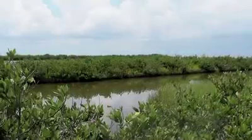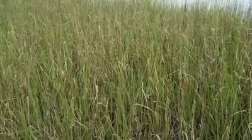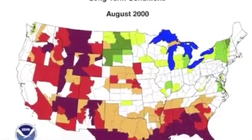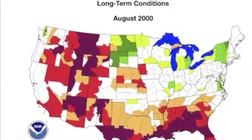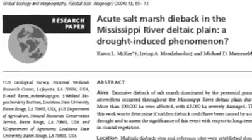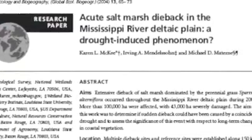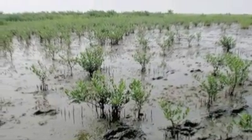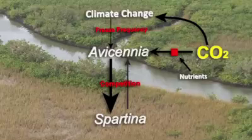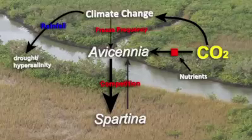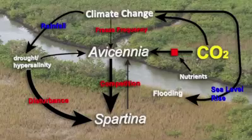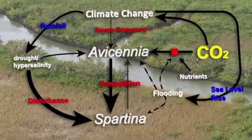With climate change, some regions will experience drier conditions and higher salinities. We can hypothesize that Avicennia is more tolerant of water stress and high salinity than Spartina, based on their natural distributions. Another piece of evidence is the large-scale dieback of salt marsh which occurred in the Mississippi River Delta at the same time as a 100-year drought. A study of the sudden dieback phenomenon was reported in the journal Global Ecology and Biogeography. The results strongly indicated that dieback of Spartina was related to this extreme weather event, which left Avicennia untouched. We can also hypothesize that sea level rise, which will alter flooding regimes, will have an effect on one or both species or interact with CO2.